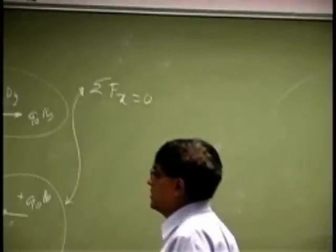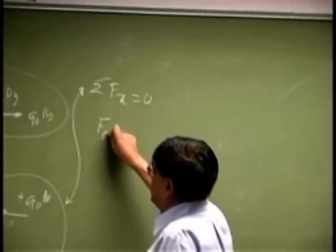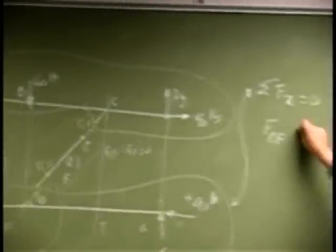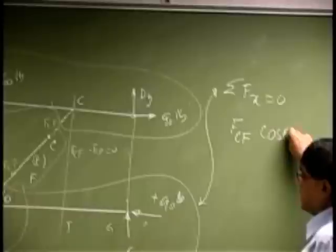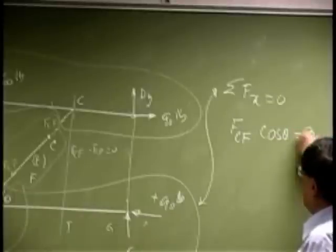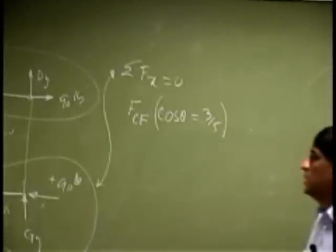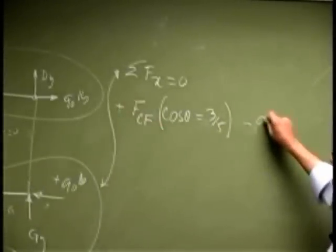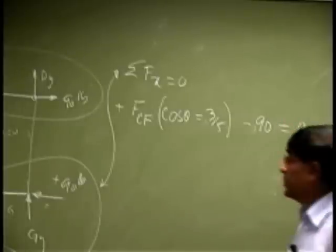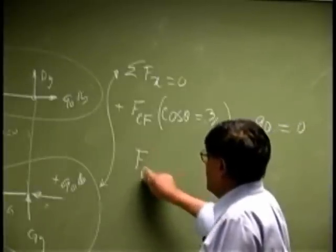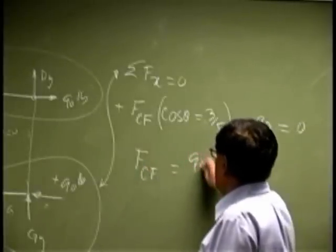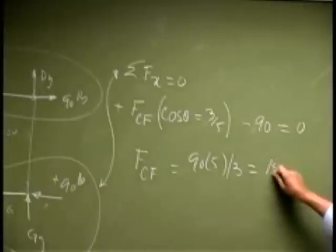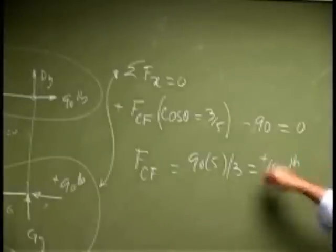Now, if I do this, you get Fcf, this force here and there will be a cosine component of that in the x plus 3 fifth and it will be positive. Then you got negative 90 and that should go to 0. So you get Fcf as 90 times 5 divided by 3. So that is 150 pounds came out positive. So it continues to go in that direction.